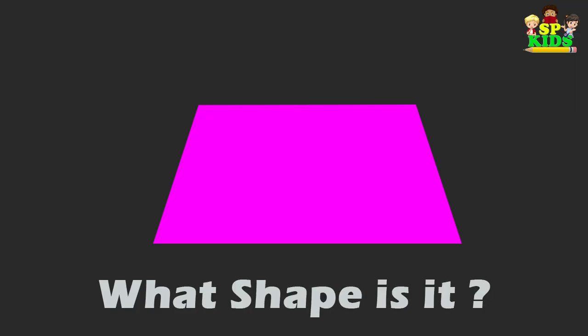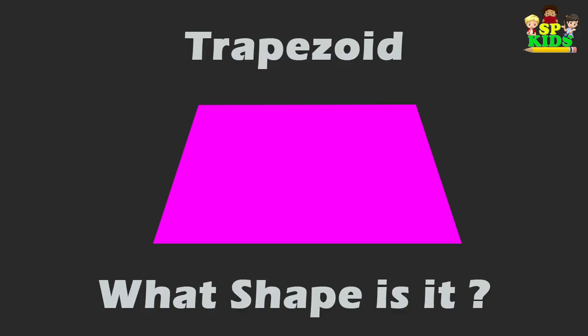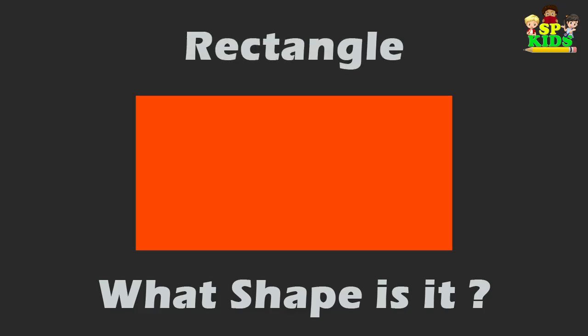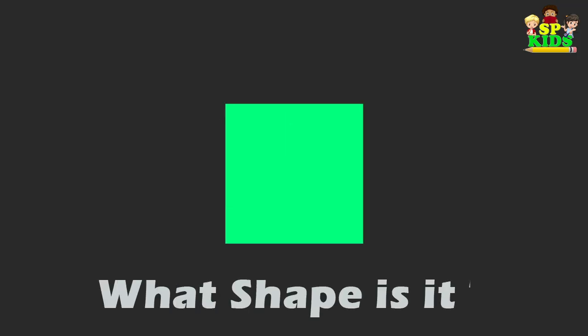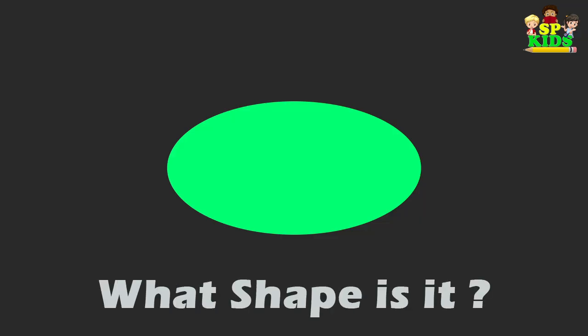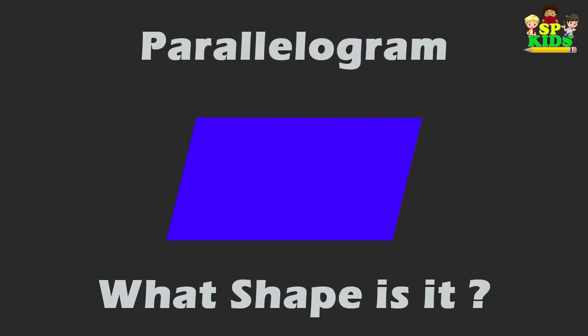What shape is it? Trapezoid. What shape is it? Rectangle. What shape is it? Square. What shape is it? Oval. What shape is it? Ellipse. What shape is it? Parallelogram.